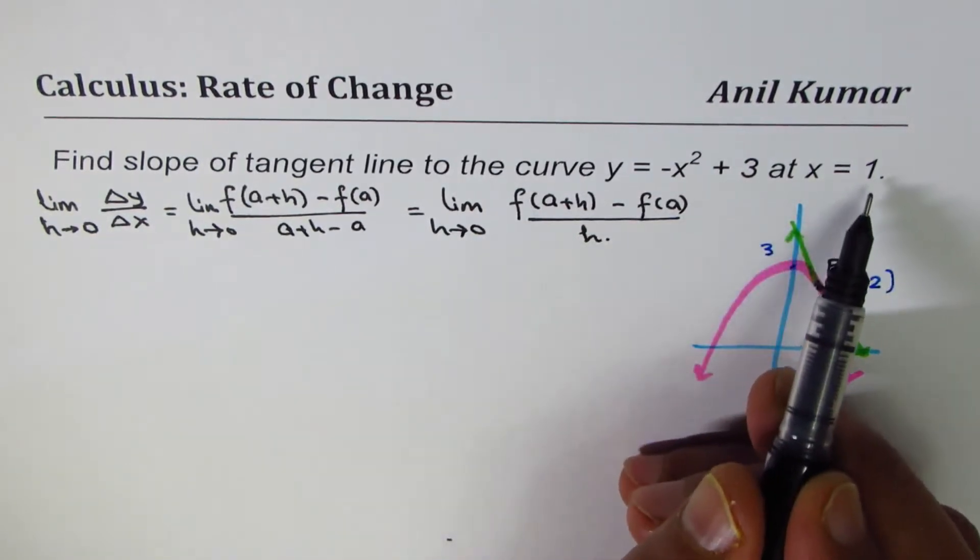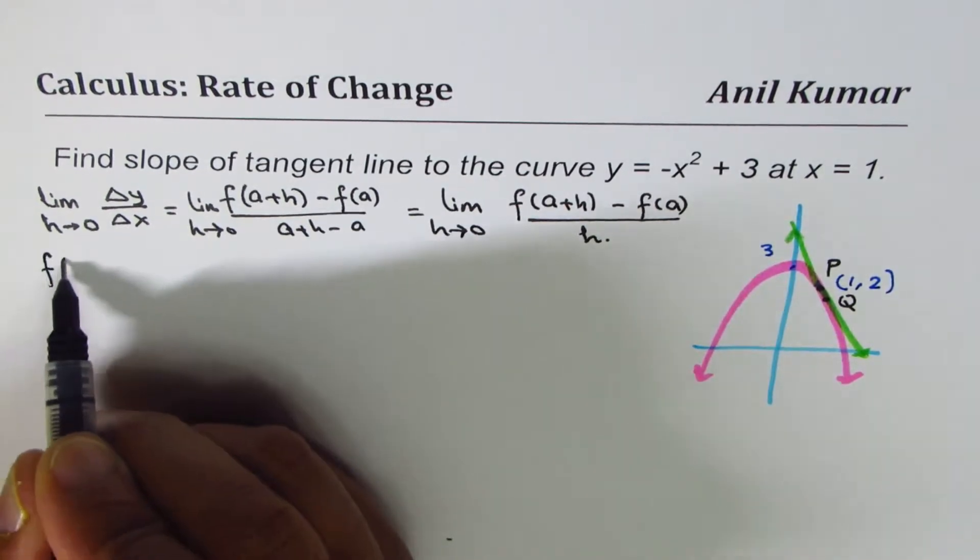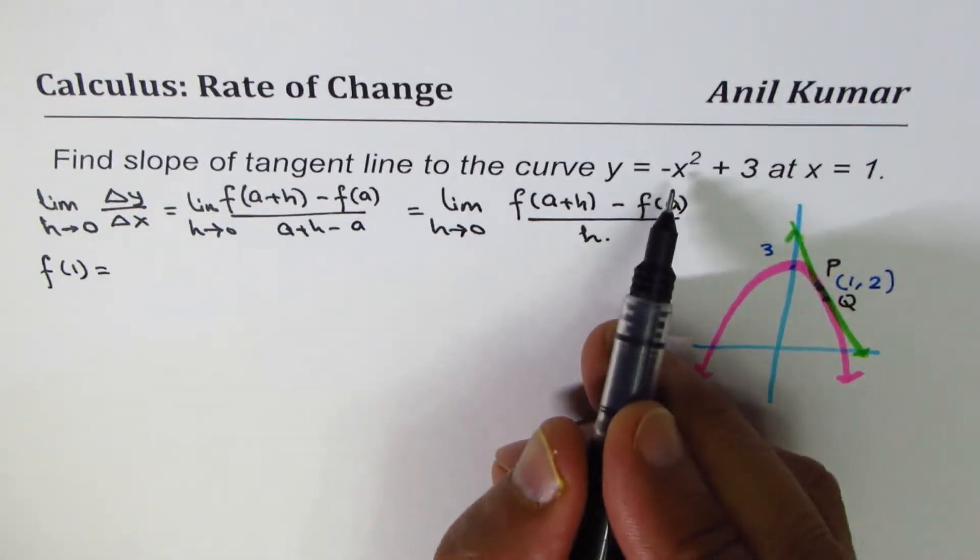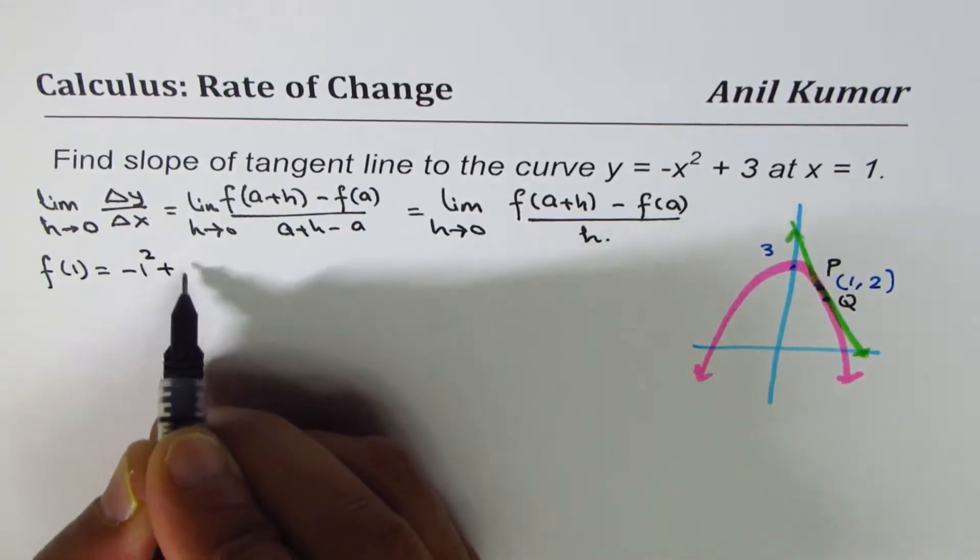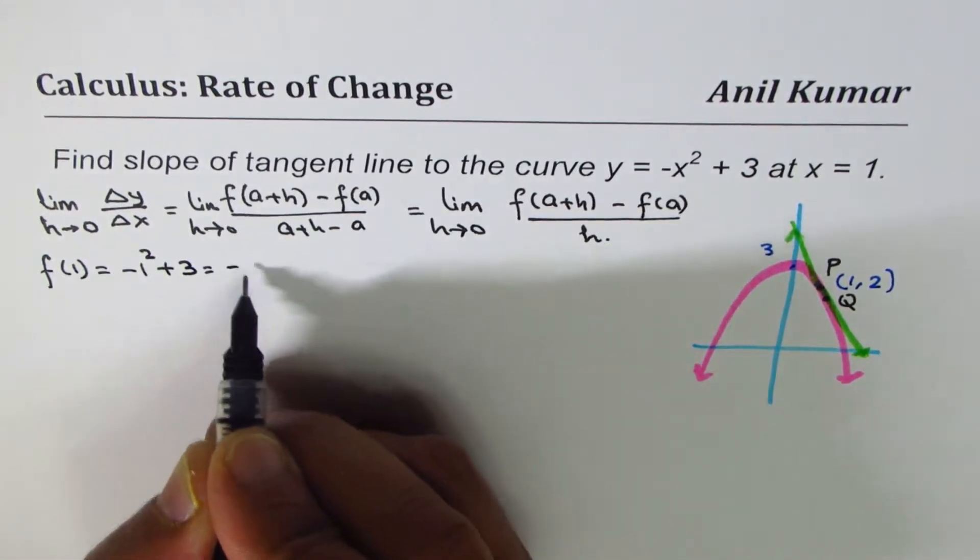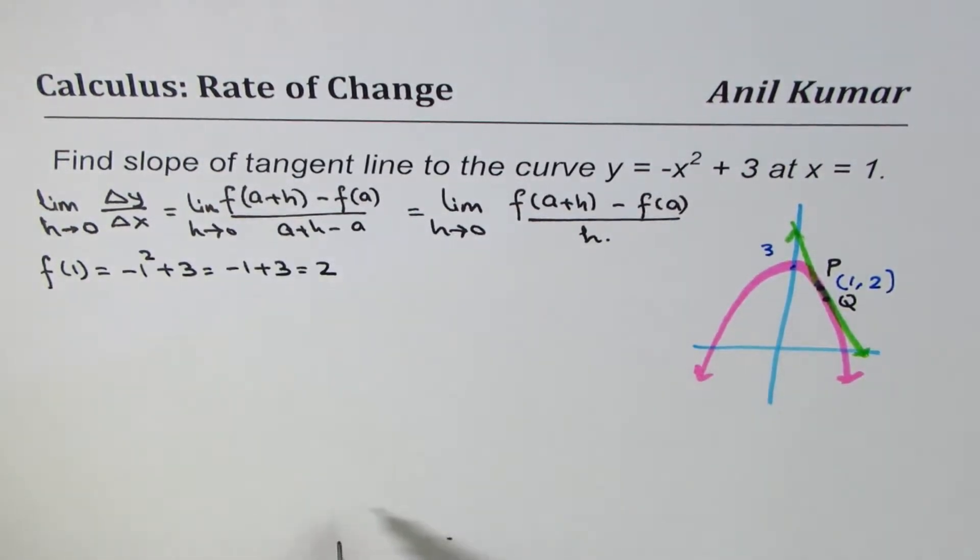Now, a is given to us as 1 in this case. So we can find what is f(1). If I substitute 1 here, I get -1² + 3, which is -1 + 3, which is 2 as I had written here.